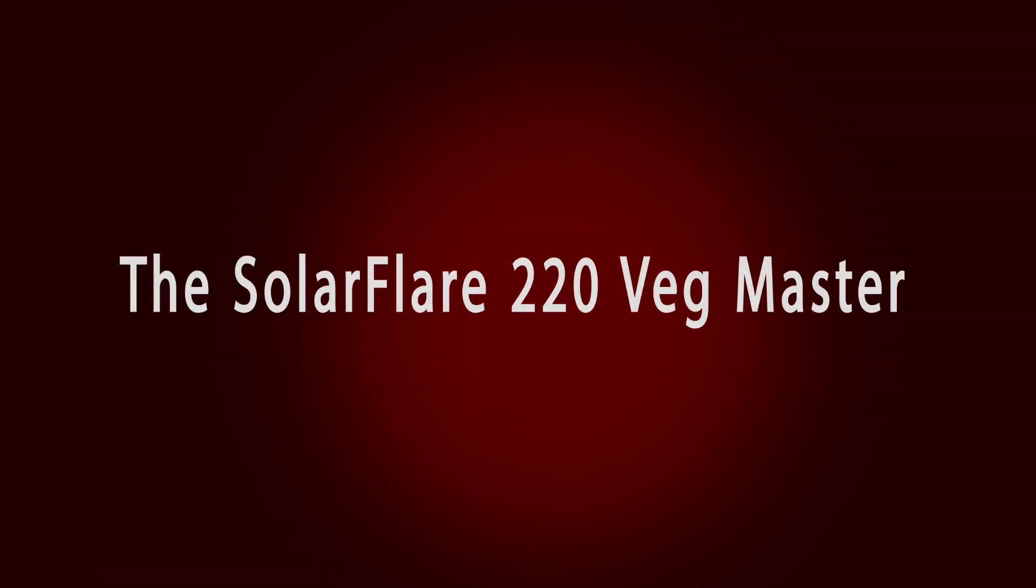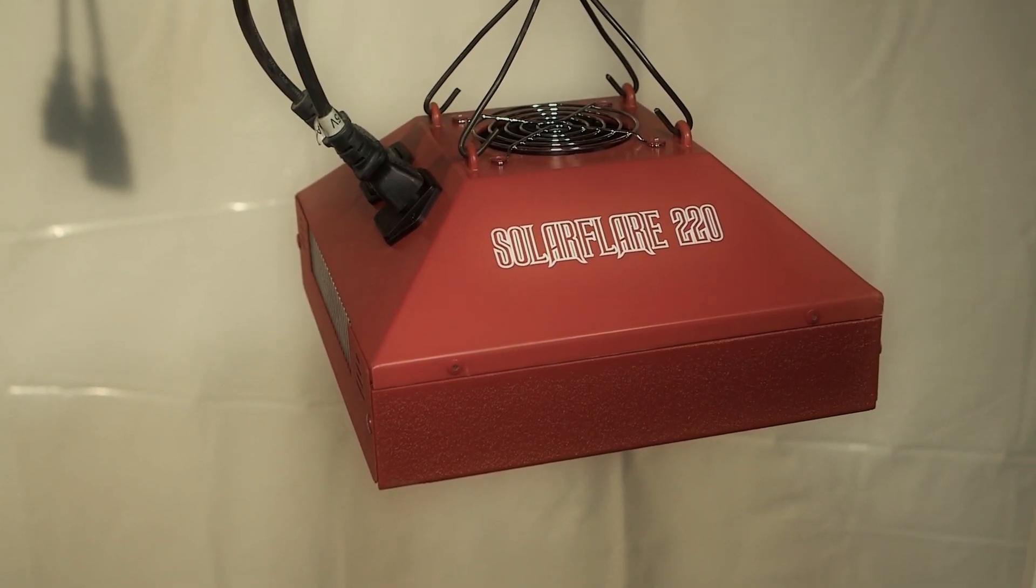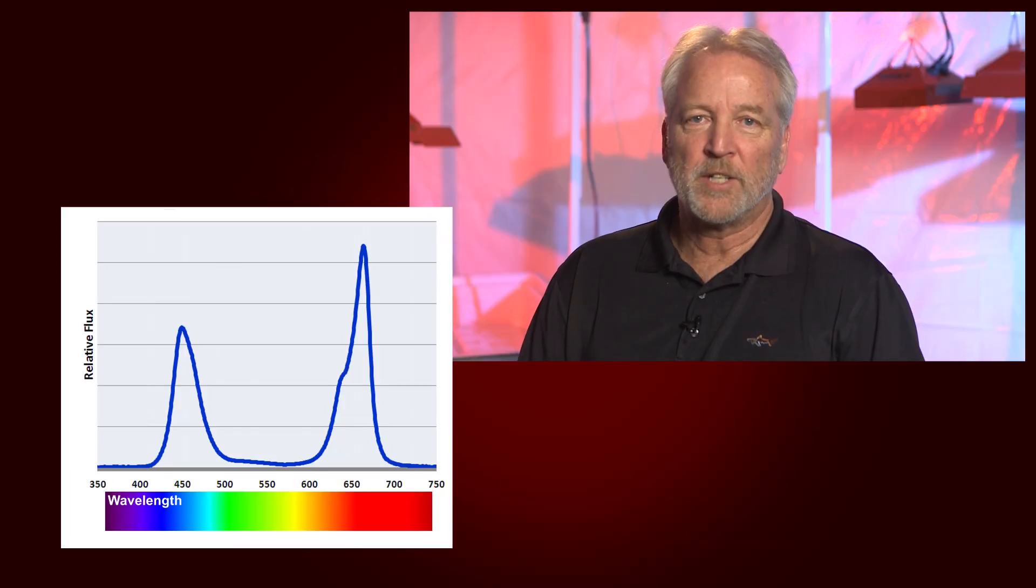The Solar Flare 220 Vegmaster. This version has an optimized color spectrum exclusively for the vegetative phase. It's designed to deliver massive vegetative growth. The spectrum is heavy on blue and deep blue but also balanced with red and deep red and warm white for active vegetation.